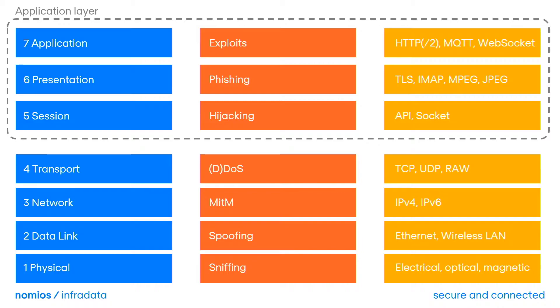You can read all about the layer 7 OSI model on Wikipedia or just Google it. Layer 7 is the application layer — it's where application-specific protocols reside, like HTTP, DNS, MQTT, etc. And that's where the WAF comes into play. It needs to interpret these protocols to detect anomalous and unwanted behavior.